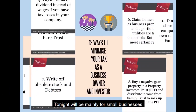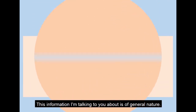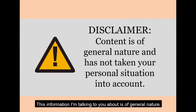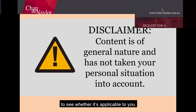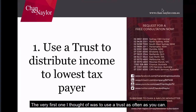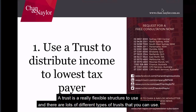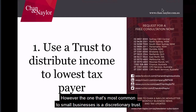Tonight will be mainly for small businesses. This information is of general nature — you need to get some personal advice. The very first tip is to use a trust as often as you can. A trust is a really flexible structure and there are lots of different types. The most common to small businesses is a discretionary trust.